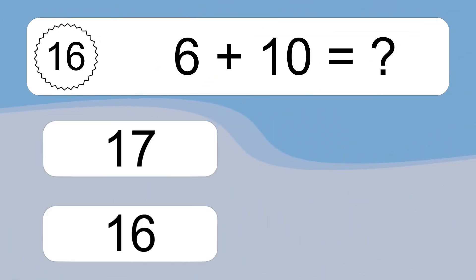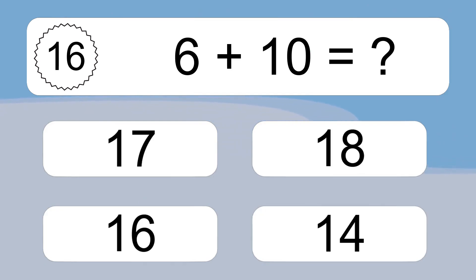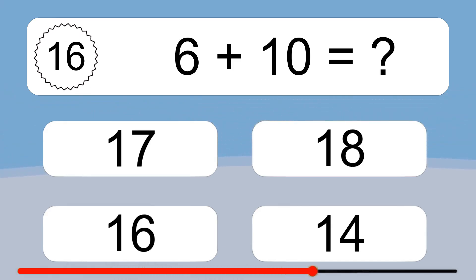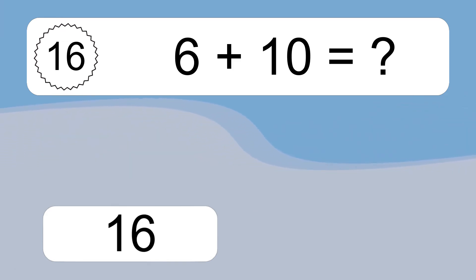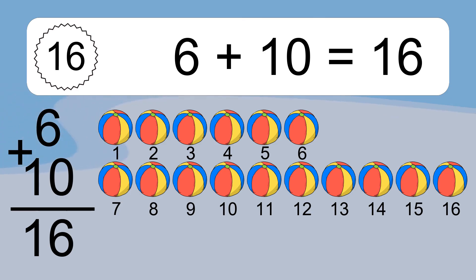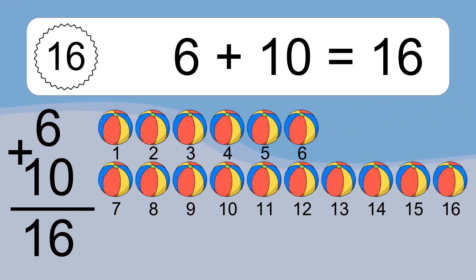6 plus 10 equals what? 6 plus 10 equals 16. Let's count it: 1, 2, 3, 4, 5, 6, 7, 8, 9, 10, 11, 12, 13, 14, 15, 16.